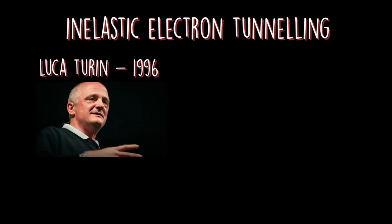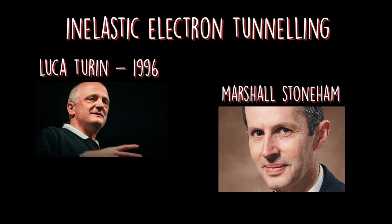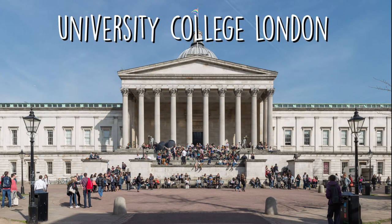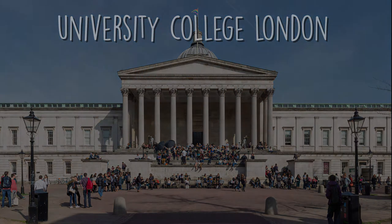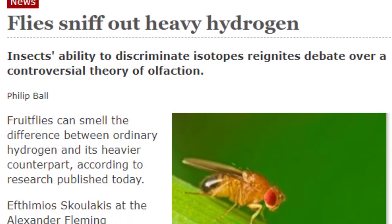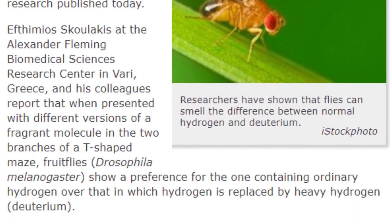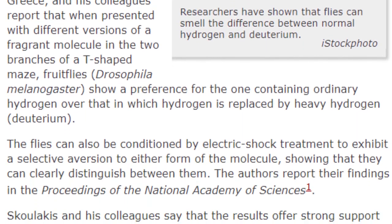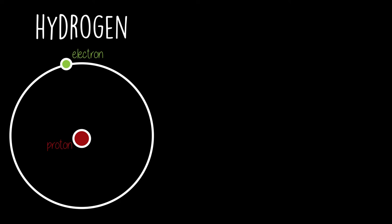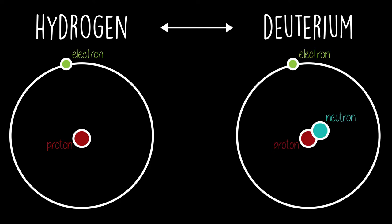The inelastic electron tunneling approach was first proposed by Luca Turin in 1996, and later shown to be consistent with known physics by Marshall Stoneham and colleagues at University College London. In 2011, scientists at MIT took an odor molecule and replaced its hydrogen with deuterium.